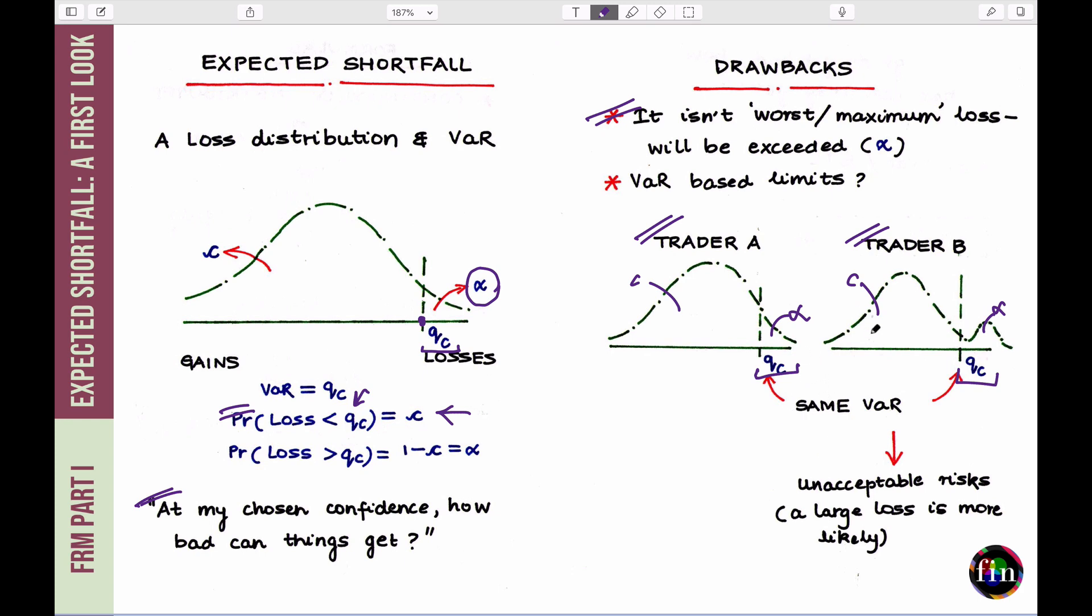So, although they have the same VAR, if I had the means of actually looking into the tail of the distribution, I would have got this intuitive idea that trader B is actually taking unacceptable levels of risks. There are large losses sitting in the tail of trader B's loss distribution, which have a high probability of happening. I mean, high relative to the losses sitting in the tail of trader A.